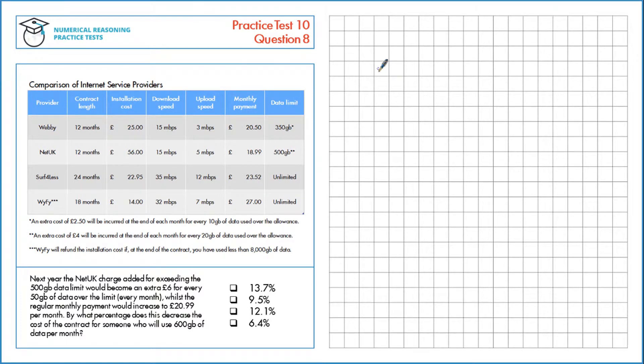Next year, the net UK charge added for exceeding the 500GB data limit will become an extra £6 for every 50GB of data over the limit every month, while the regular monthly payment will increase to £20.99 per month.